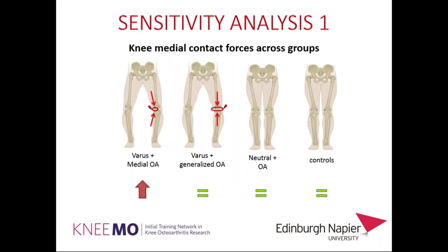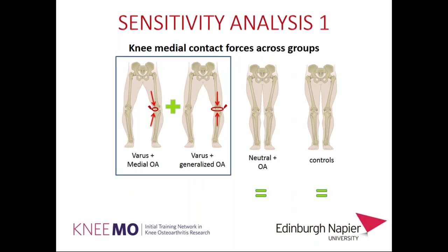To confirm our starting hypothesis, we ran a sensitivity analysis combining both varus alignment groups. The resulting medial contact force in this combined group was equal to controls or osteoarthritis patients with neutral alignment, confirming our initial hypothesis and also confirming the results obtained by Kummer.